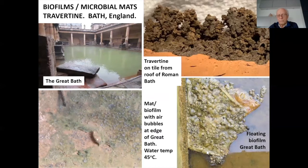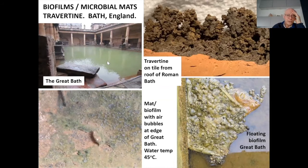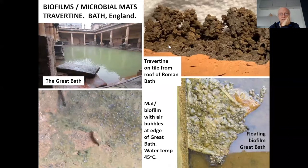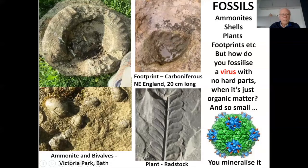Here's a beautiful example of biofilms from the Roman Bath in Bath. We have a hot spring here — water's 45 degrees — and we have these wonderful biofilms around the edge. This is what they look like floating on the great bath. We've got lots of travertine precipitating there — beautiful travertines precipitated on the roof of a Roman tile.